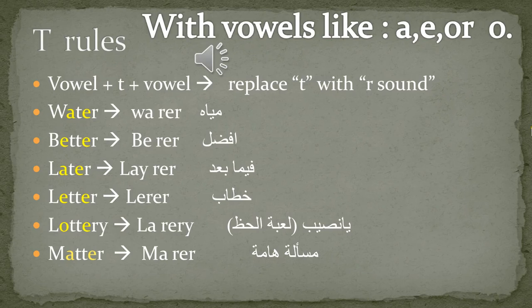T-Rules. T is used — in this case, we replace the T with an R sound. You should say it like: water, better, litter, lottery, and matter.